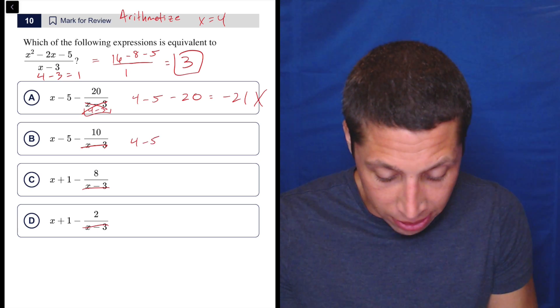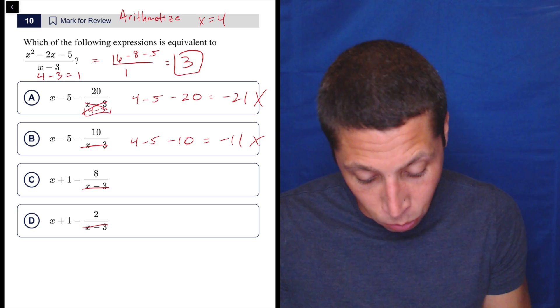Four minus five is negative one. Minus 10 is negative 11. That doesn't work.